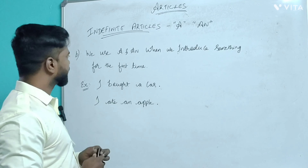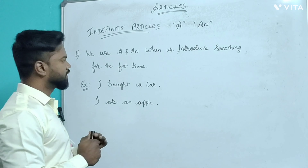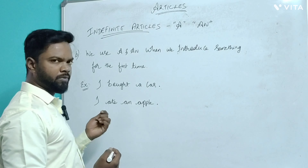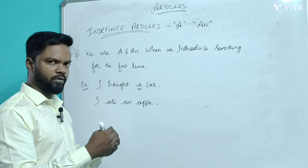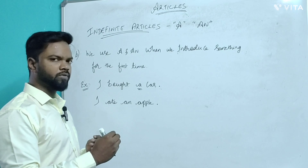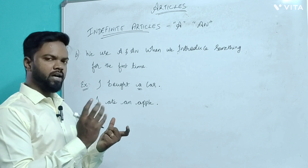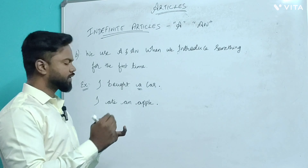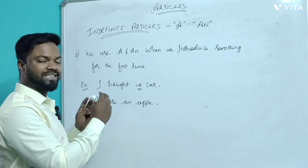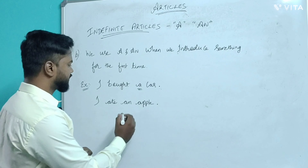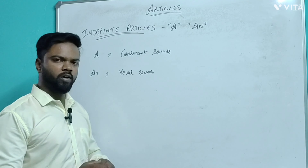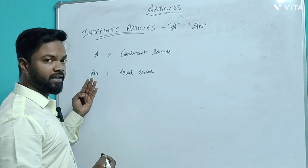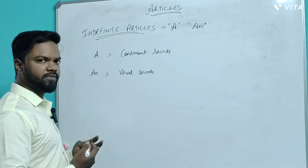Another example: 'I want to buy an apartment.' Again, I'm not referring to a particular apartment or a particular place — I'm just randomly saying I want to buy an apartment. Number two: we use 'a' and 'an' when we introduce something for the first time. For example: 'I bought a car' — here I am introducing a car for the first time.